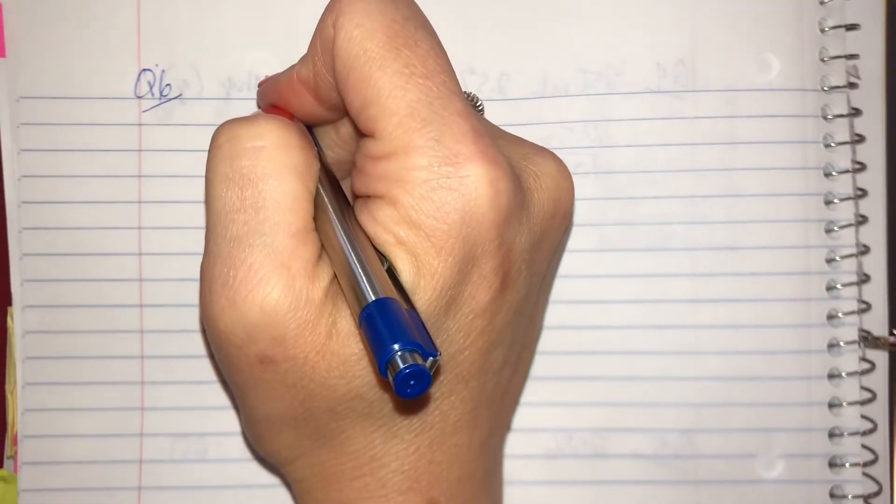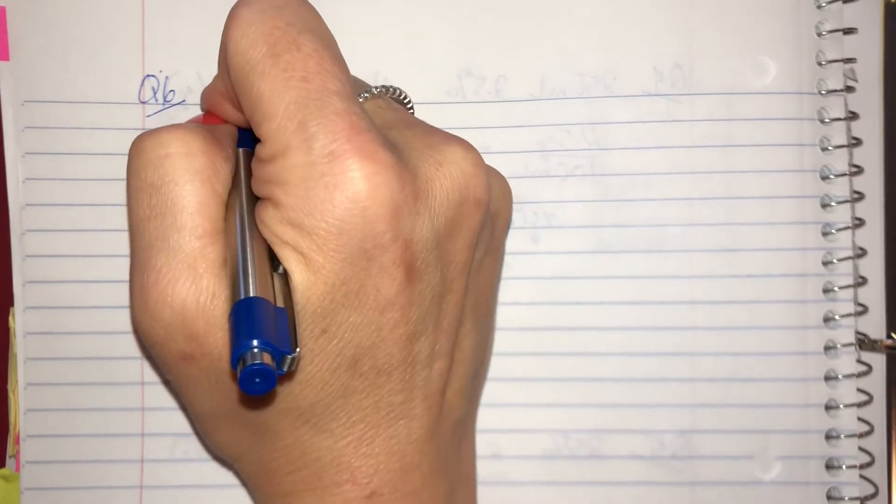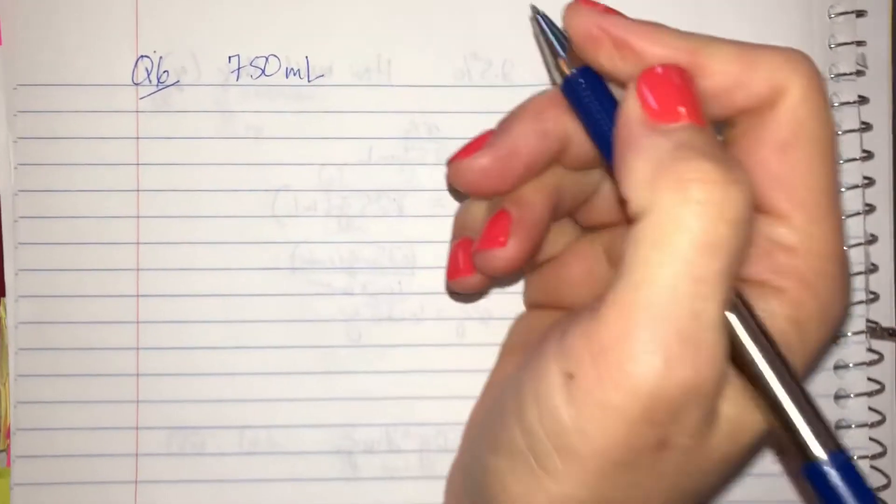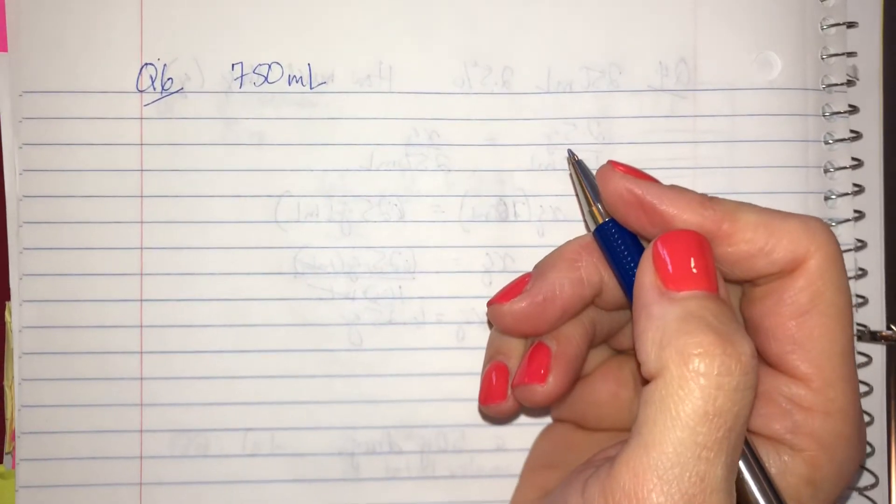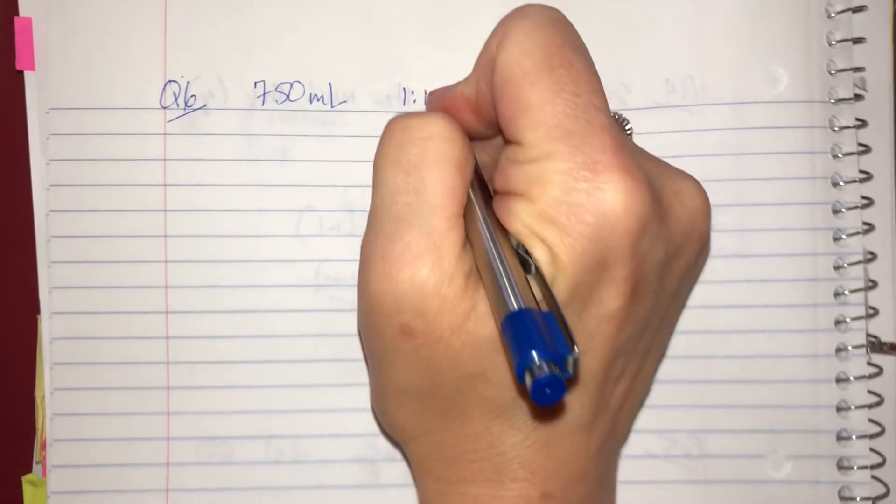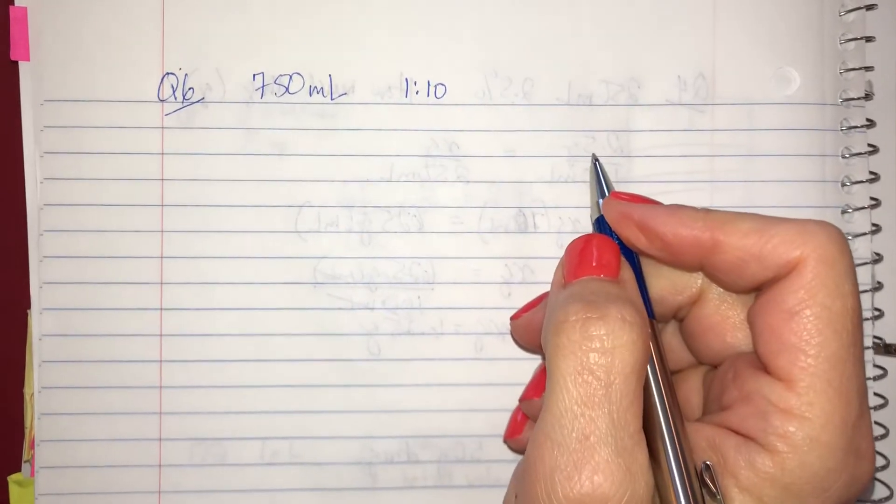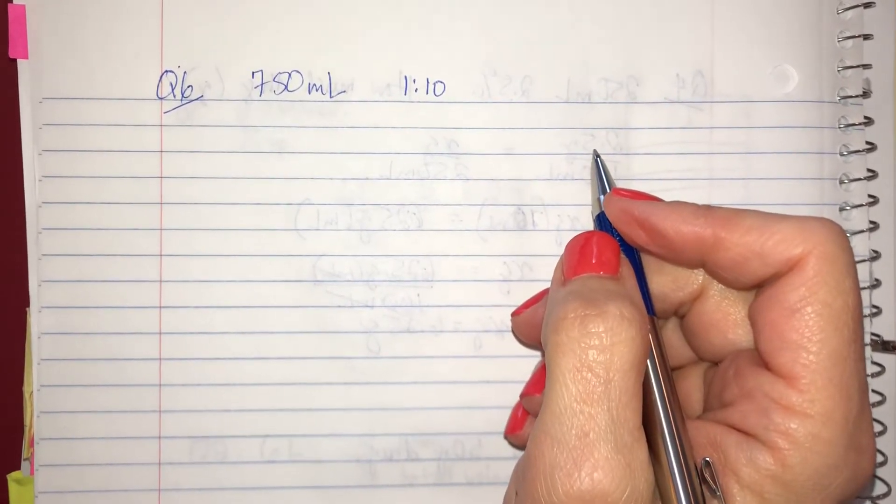Question 6. Your 750 ml disinfectant bottle is empty. I need to refill it with a 1 to 10 dilution. How many ml of disinfectant will I need?